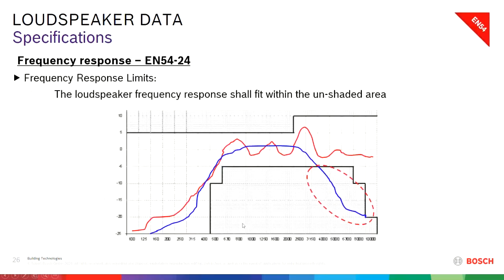Frequency response as specified in EN54-24. Looking into that standard, a loudspeaker must fit in the unshaded area — the frequency response must be between the shaded areas, within the white area. When a loudspeaker is able to reproduce something in this white area it will be certified. If it falls down into the gray area, the loudspeaker will not be certified. So it's important that a loudspeaker can reproduce sound at a certain level within this defined area.